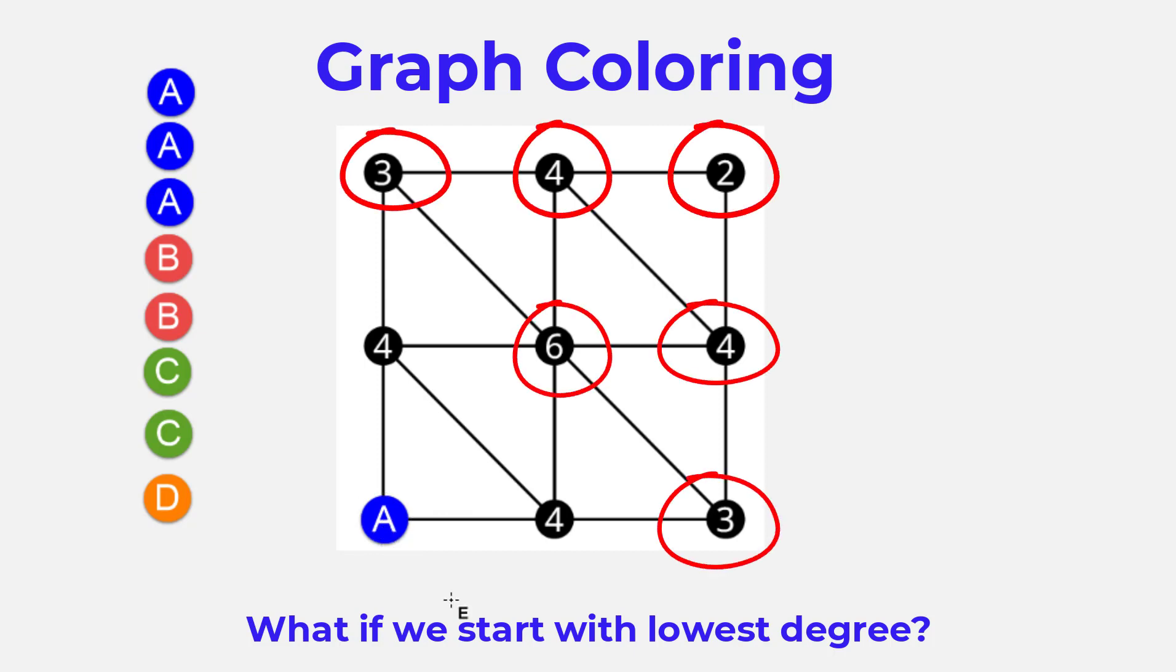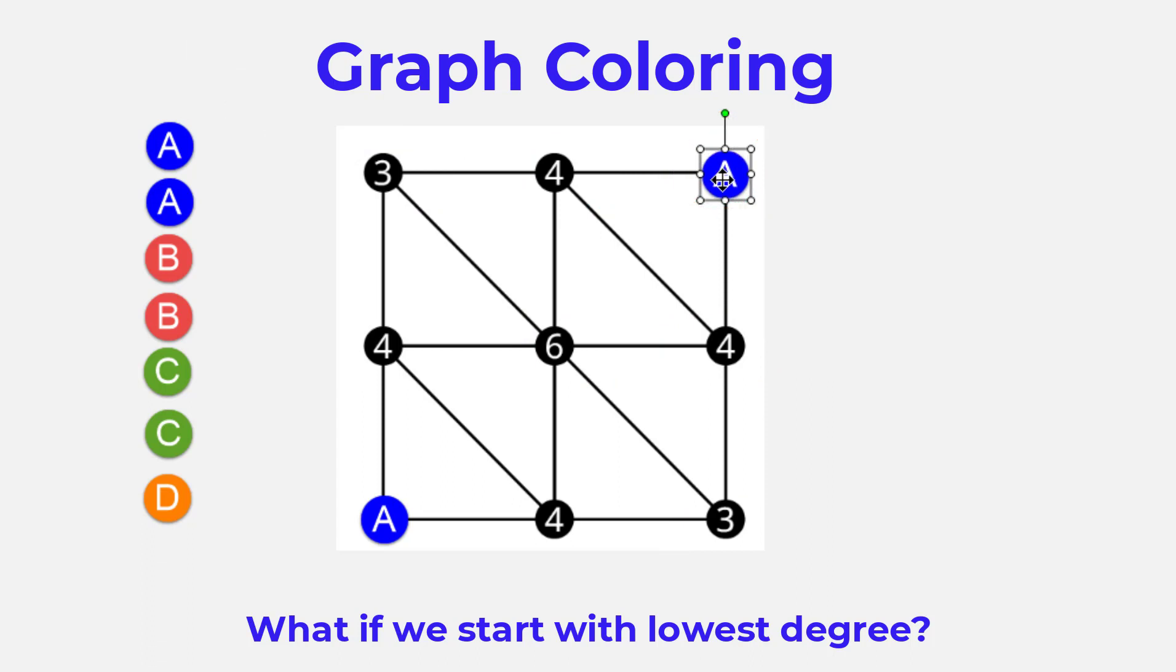There's another vertex of degree two. If I color that blue, that would be fine because it's not connected to the other blue vertex. Now the next lowest vertex degree would be three. I have one in each corner.